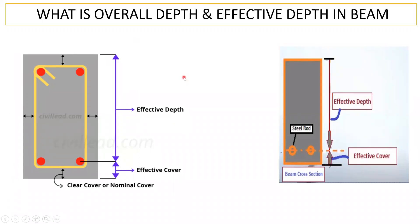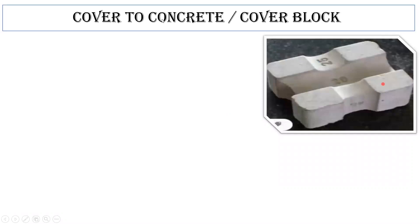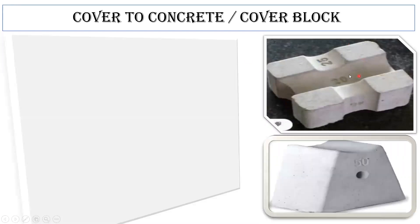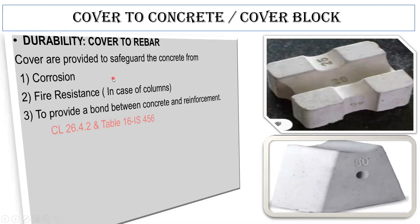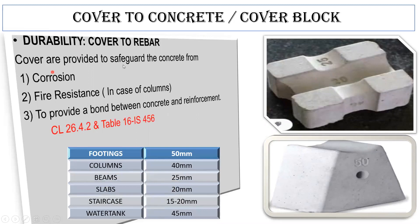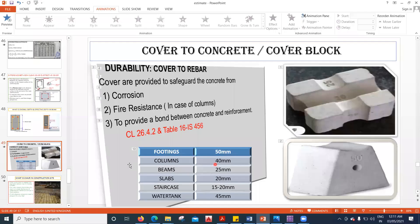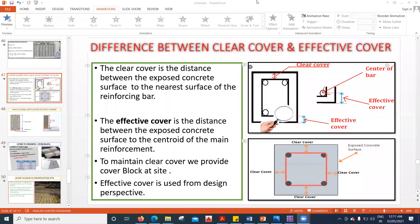Now we'll see where cover blocks are provided. Cover blocks are used to maintain the clear cover. They are provided from the durability point of view — to safeguard the concrete from corrosion. Second, from fire resistance, especially in the case of columns. Third, to provide a bond between the concrete and the reinforcement. Now, how much should that gap be? It depends on the element: we don't know yet whether it is 10, 20, 30, 40, or 50 mm — that we are going to see now.